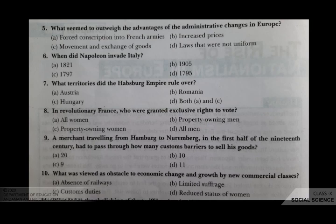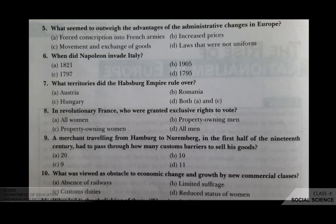In revolutionary France, who were granted the exclusive right to vote? Your options are A all women, B property owning men, C property owning women, D all men. The correct answer is B, property owning men. Earlier the right to vote was not given to everyone — only a few sections of people got the right to vote. Today everyone, whether rich, poor, educated or uneducated, has a right to vote.